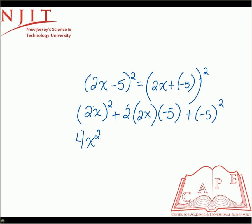So the second term, we have 2 times 2x, which is 4x. 4x times the negative 5 is minus 20x.